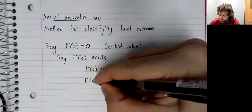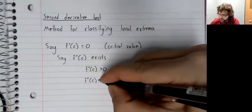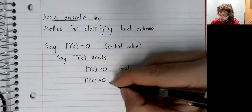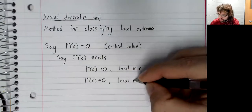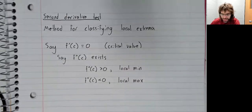If the second derivative is negative, this critical value is a local max.